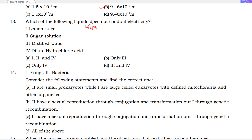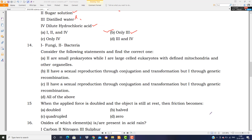Which of the following liquids does not conduct electricity? Mostly acids conduct electricity because they have free ions inside them. Lemon juice will conduct electricity. Sugar solution — does it conduct? Distilled water will not conduct electricity because distilled water has no particles inside it. Dilute hydrochloric acid will definitely conduct electricity. So the correct option is B — only distilled water (third option).